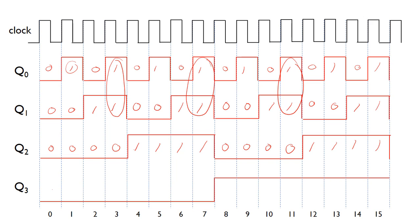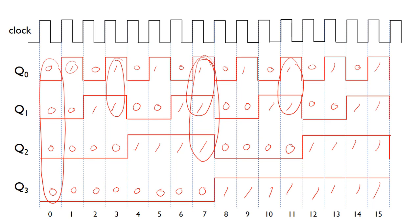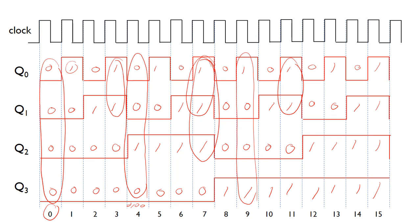The same behavior applies to the next flip-flop: bit 3 only toggles when all three of Q0, Q1, and Q2 are equal to 1. Reading the waveforms gives us binary values which correspond to decimal equivalents — for example, 0, 0, 0, 0 is decimal 0; 0, 1, 0, 0 is decimal 4; and 1, 0, 0, 1 is decimal 9. So by reading the waveform we get the binary values and their equivalent decimal value.